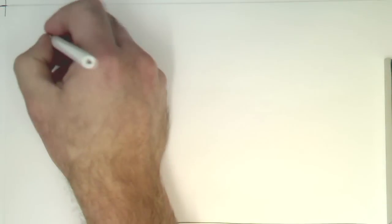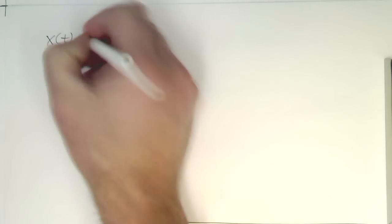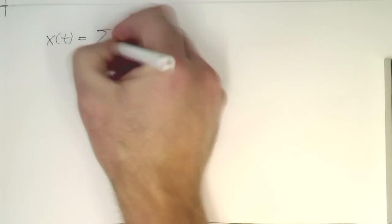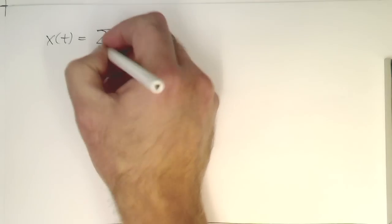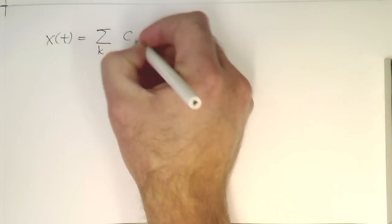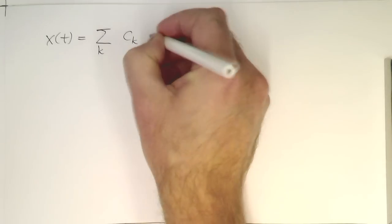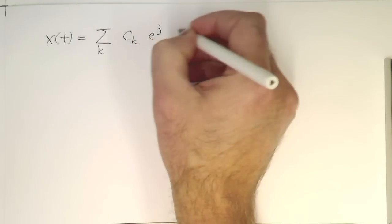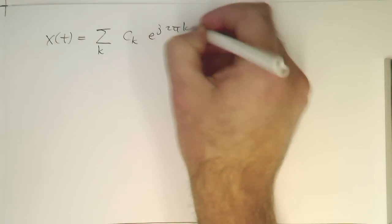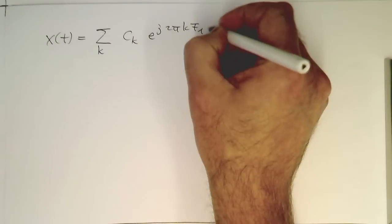So now let's just write down our function here again for x of t. We've got our index k here, ck e to j 2π k f1 t.